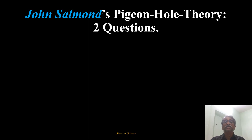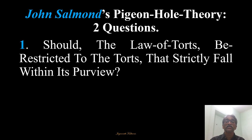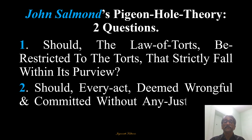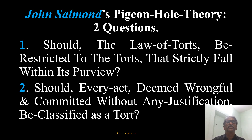John Salmond's pigeonhole theory is based on two questions. First, should the law of torts be restricted to the torts that strictly fall within its purview? Second, should every act which is deemed wrongful and committed without any justification be classified as a tort? Every act according to Salmond cannot be a tort — only whatever is specified as a tort should be considered as tort as per John Salmond's theory.